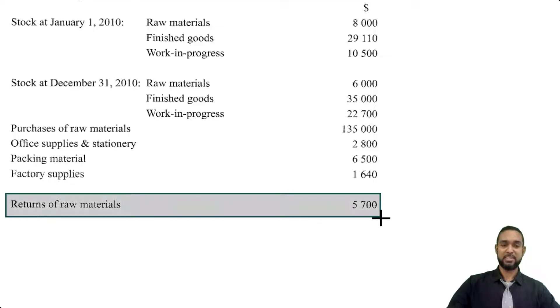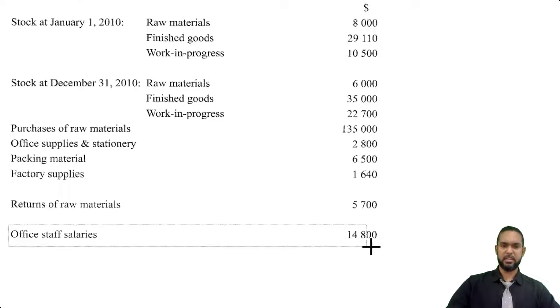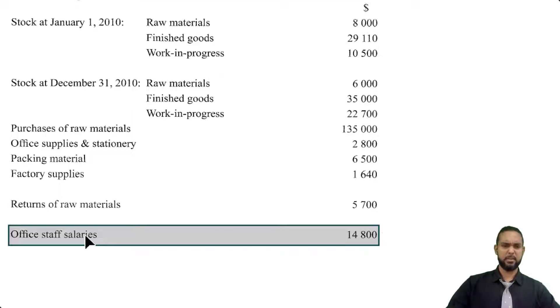We have an item kind of separated by itself — returns of raw materials. And another separated item: office staff salaries.